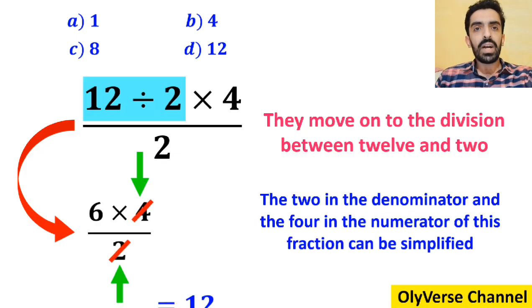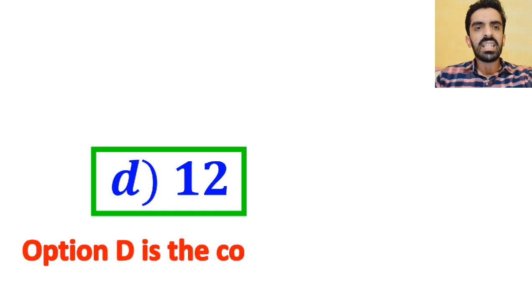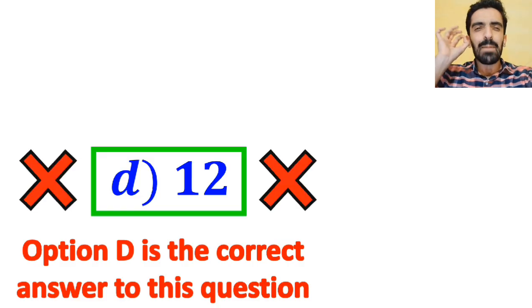And the final answer will be 12, and without any hesitation they quickly conclude that option D is the correct answer to this question. But this answer is absolutely wrong.